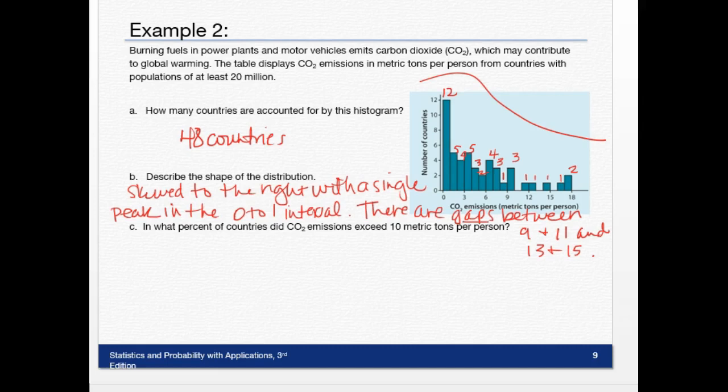Now, in what percent of countries did carbon dioxide emissions exceed 10 metric tons per person? Well, exceed means more than 10. So I look at my thing. Which ones are more than 10? Again, here's 9 to 10. So I'm looking at this piece of the graph right here. If I add those up, 1, 2, 3, 4, 5, 6, that's 6 out of the 48 countries.